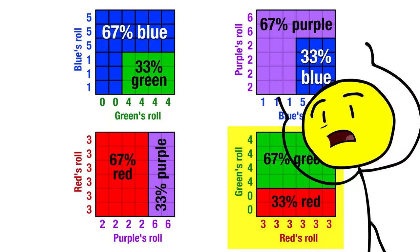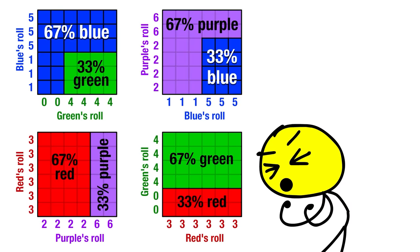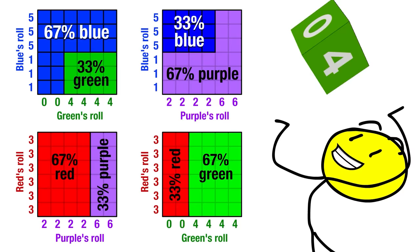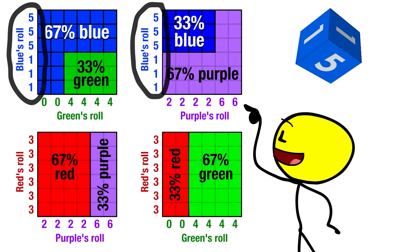But hold on, this is an even number of match-ups, which means we can try something interesting. What if we transpose every other graph, like this? Now, the green dice result shows up as the x-axis on both graphs featuring green, and so does purple. And on the other hand, the blue dice result shows up as the y-axis on both graphs featuring blue, and so does red.